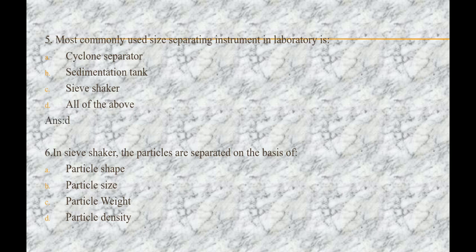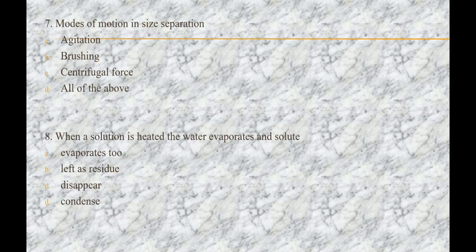Next question is: in a sieve shaker, the particles are separated on the basis of — options are: A) particle shape, B) particle size, C) particle weight, D) particle density. The answer is B, that is particle size.